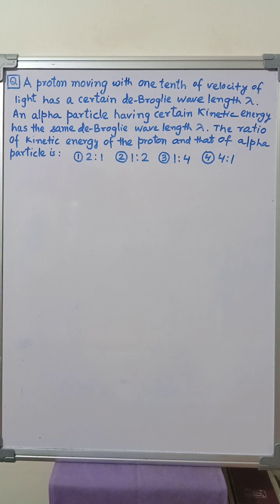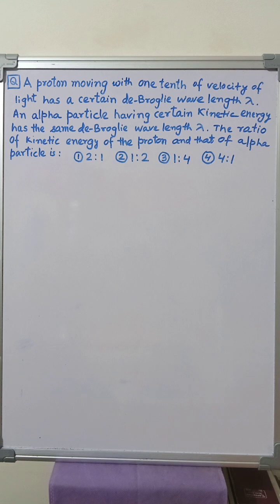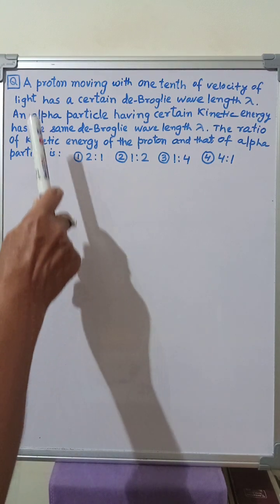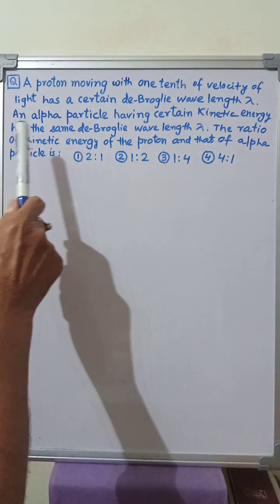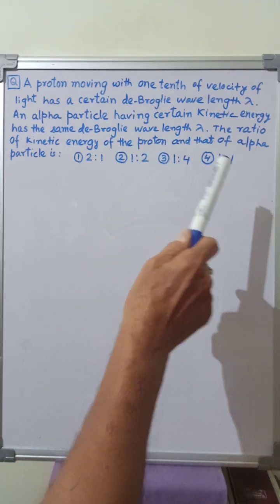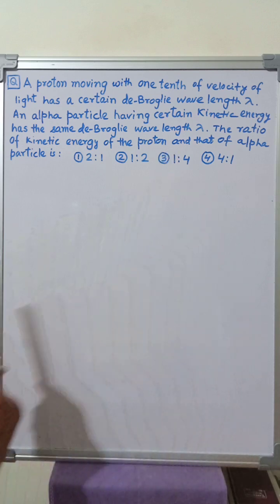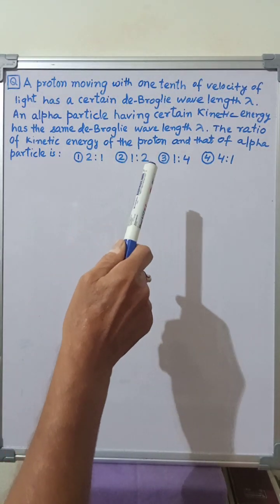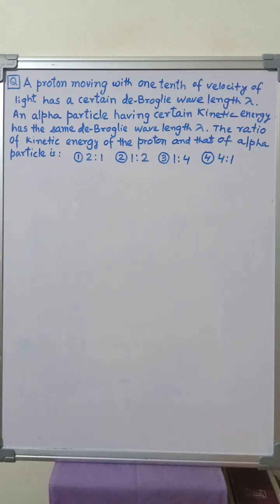Welcome to Timeless Concepts from Physics Helpline. In this video tutorial, we will discuss a multiple choice question taken from JEE Main physics question paper of 2023. The question is based on comparison of de Broglie wavelength associated with a proton and an alpha particle in motion. A proton moving with one tenth of the velocity of light has a certain de Broglie wavelength lambda. An alpha particle having certain kinetic energy has the same de Broglie wavelength lambda. The ratio of kinetic energy of the proton to that of the alpha particle is required.